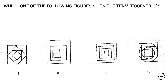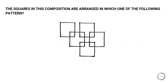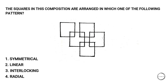Moving on: which one of the following figures suits the term 'eccentric'? The answer is option two. Next: the squares in this composition are arranged in which one of the following patterns — one) symmetrical, two) linear, three) interlocking, four) radial? The answer is interlocking, because all the squares are interlocked with each other.